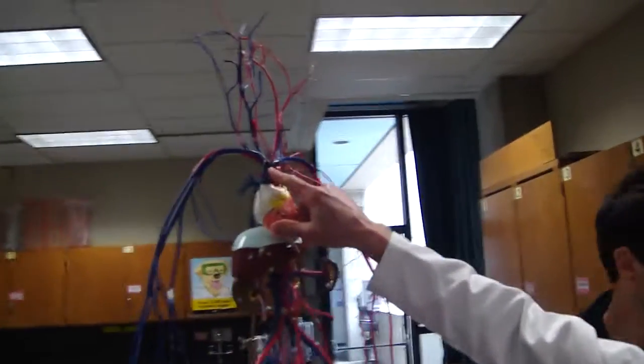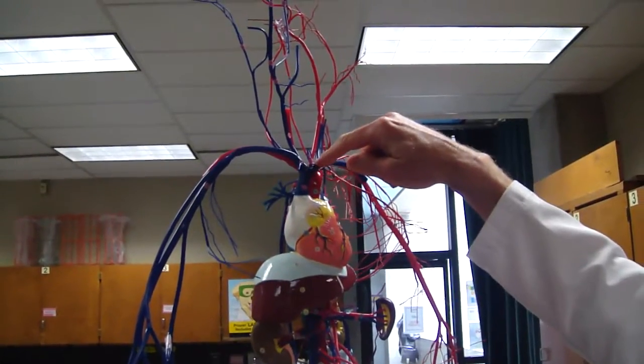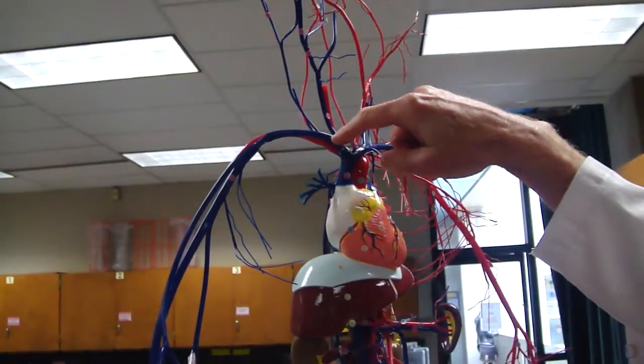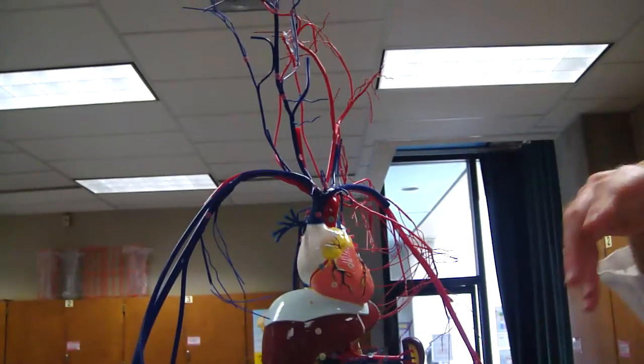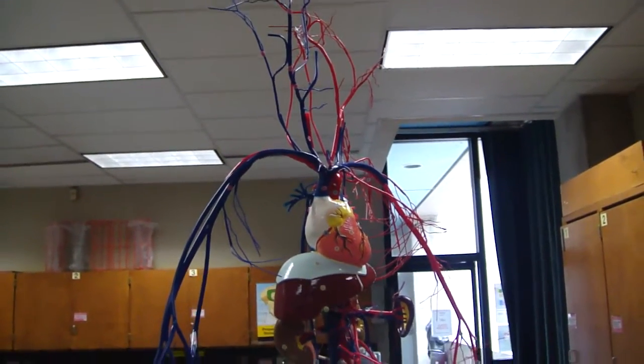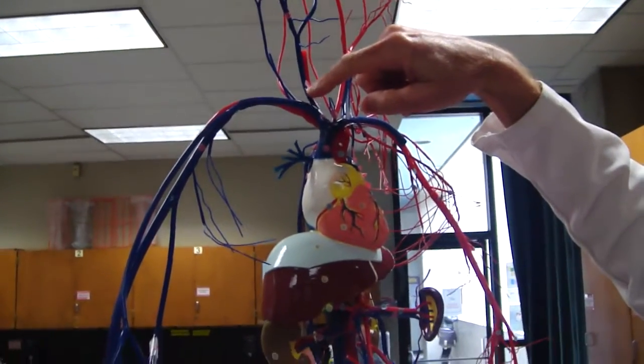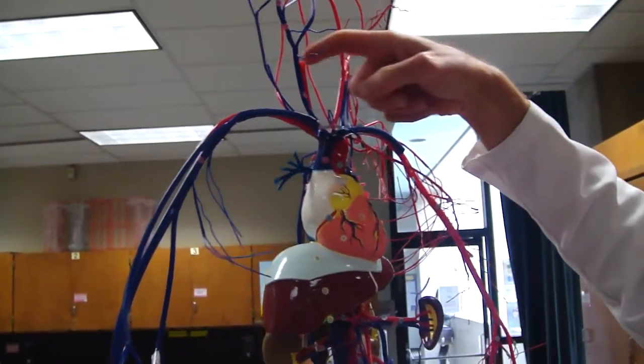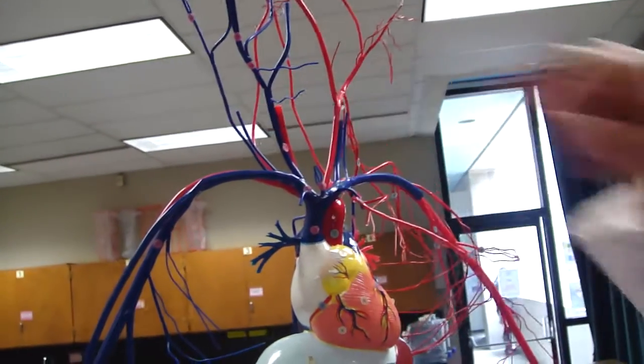Up here, so superior vena cava, brachiocephalic, left brachiocephalic, right brachiocephalic. And this is the only model that we see what flows into the brachiocephalic. You can see it really well. So this is internal jugular, vertebral or vertebral, and external jugular.